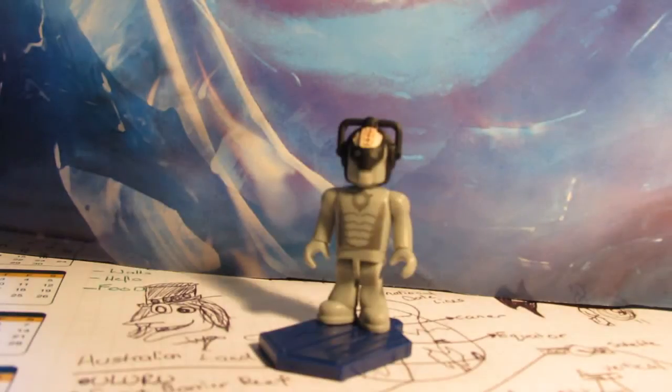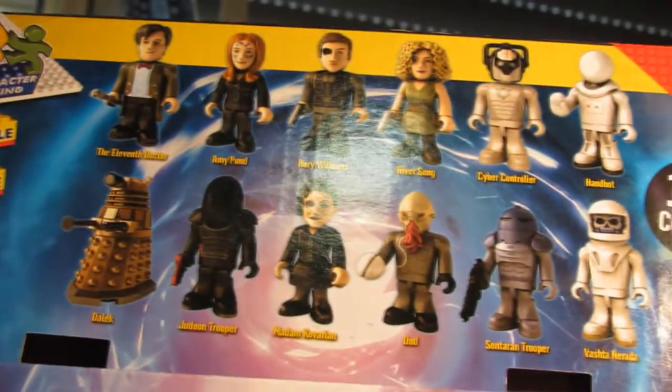Here we have a Cyber Controller which is the letdown of the wave, because basically everything in this wave is clever and unique. As you can see all the figures are really good until you get to the Cyber Controller and you go, but why?